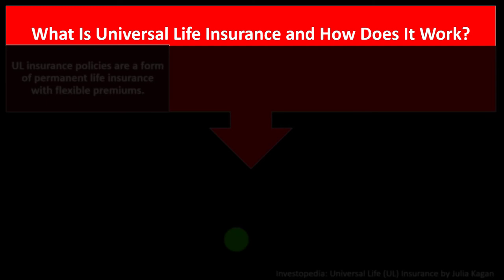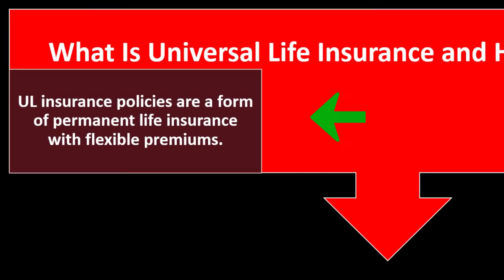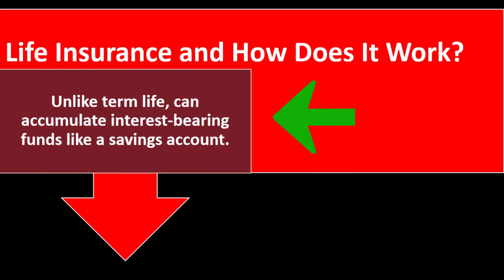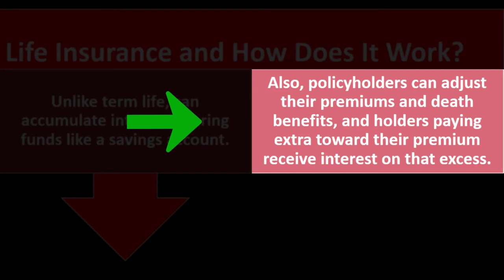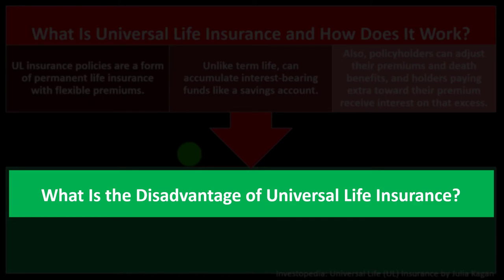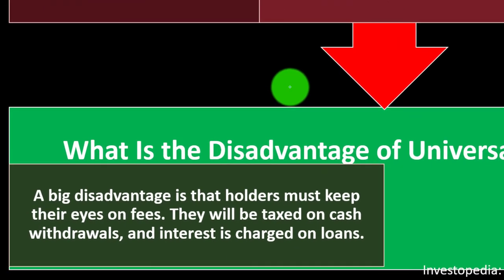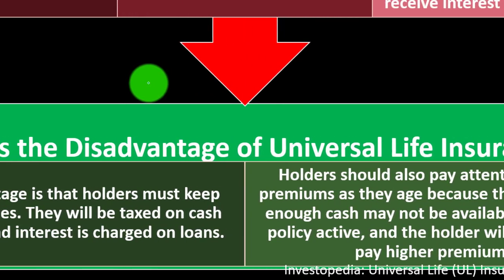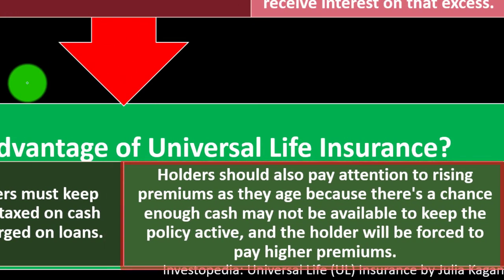What is universal life insurance and how does it work? UL insurance policies are a form of permanent life insurance with flexible premiums. Unlike term life, they can accumulate interest-bearing funds like a savings account. Policyholders can adjust their premiums and death benefits, and holders paying extra toward their premium receive interest on that excess. A big disadvantage is that holders must keep their eyes on fees — they will be taxed on cash withdrawals, and interest is charged on any loans taken against the cash value. Holders should also pay attention to rising premiums as they age, because there's a chance enough cash may not be available to keep the policy active, forcing higher premiums.